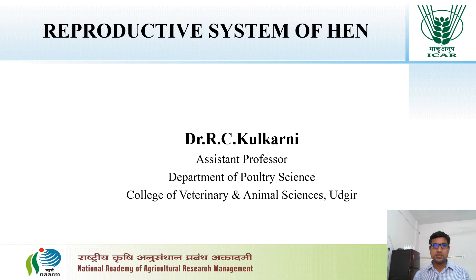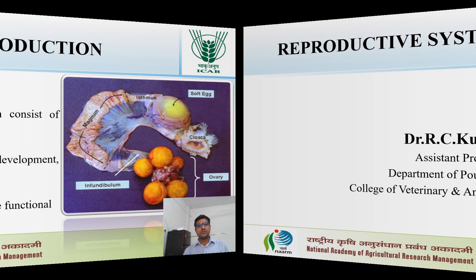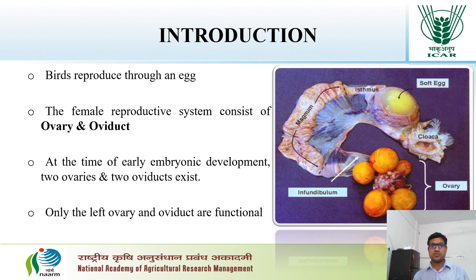Dear student, today we are going to learn about the reproductive system of hen. The reproductive system of hen consists of ovary and oviduct. The birds reproduce through an egg, which means they are oviparous.